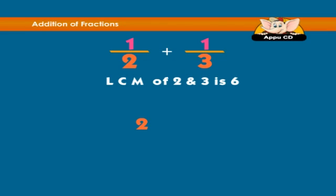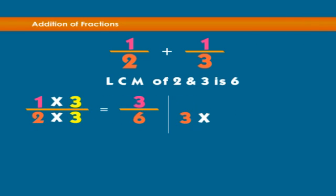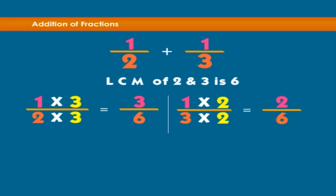Change the first number half so that it has six as the denominator. And change the second number one-third so that it has six as the denominator. Now that we have the same denominators, we can simply add the numerators.